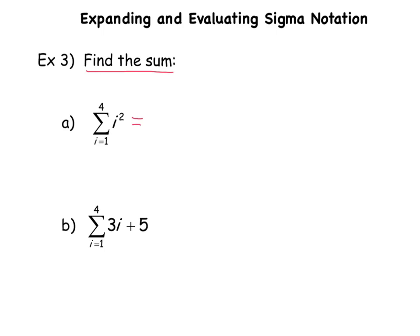have i going from 1 to 4 and the rule is i². So I'm going to plug in 1, which gives 1², then add what I get when I plug in 2, which is 2², then 3², then 4². This equals 1 + 4 + 9 + 16, and that gets me to 30.